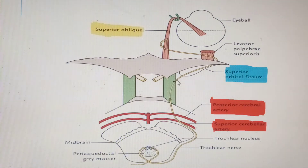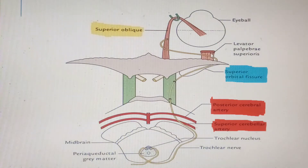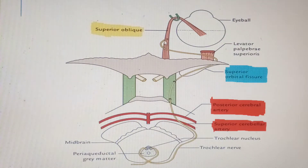From the lateral wall of the cavernous sinus, the trochlear nerve runs through the superior orbital fissure to gain access into the orbit. Once inside the orbit, it runs superficial to the levator palpebrae superioris — which is supplied by the superior division of the oculomotor nerve — and then goes on to supply the superior oblique muscle.